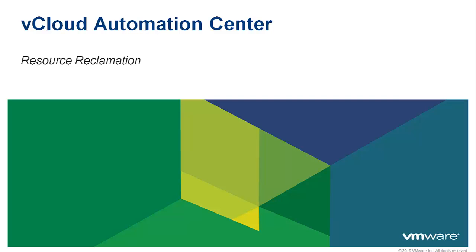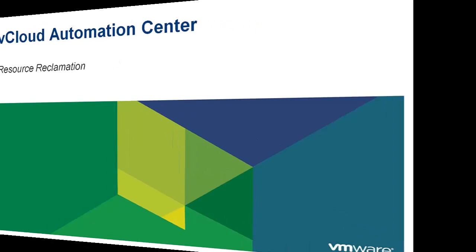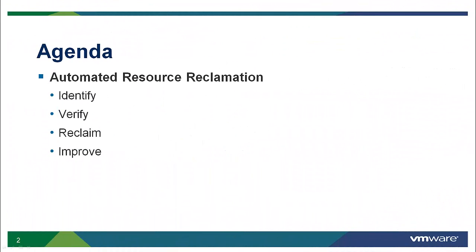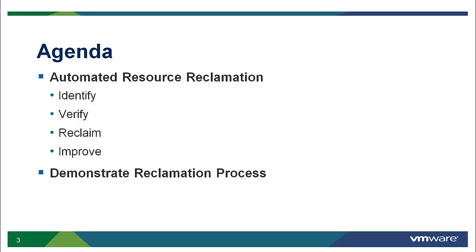Welcome to the vCloud Automation Center demo on Resource Reclamation. We will begin by defining what automated resource reclamation is, and in particular, how the vCloud Automation Center can help customers through the four steps of reclamation: identify, verify, reclaim, and improve. Next we will log on to the vCloud Automation Center and demonstrate these capabilities.